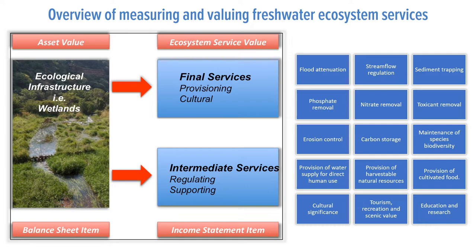From the slide here we can see on the left that we can consider the habitat as an asset, and the value of that asset comprises the final service. Typically they are cultural or provisioning services, and the intermediate service is typically supporting or regulating services. The right-hand panel here shows a range of services that indicators of value or importance can be assigned. These inevitably involve a commensurate range of techniques or comparisons to assign a metric of value.